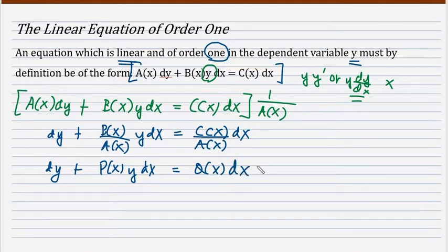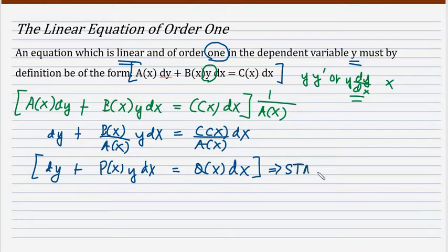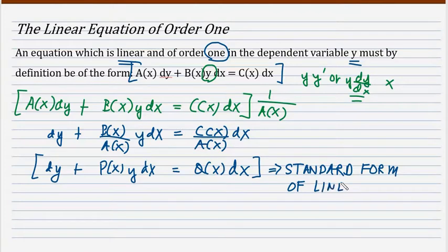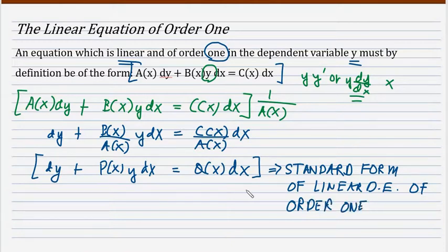And let us name the quotient C(x)/A(x) as Q(x). This particular form is what we will choose as the standard form for a linear equation of order 1: dy + P(x)y dx = Q(x)dx. Every time you see a differential equation, you check if it fits this form, and if it does, you conclude it is a linear differential equation of order 1.